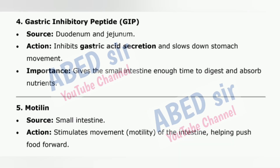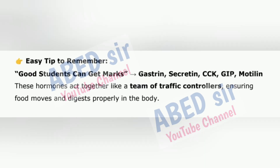4. Gastric Inhibitory Peptide (GIP) — Source: duodenum and jejunum. Action: inhibits gastric acid secretion and slows down stomach movement. Importance: gives the small intestine enough time to digest and absorb nutrients. 5. Motilin — Source: small intestine. Action: stimulates movement (motility) of the intestine, helping push food forward. Easy tip: 'Good Students Can Get Marks' — Gastrin, Secretin, CCK, GIP, Motilin. These hormones act together like a team of traffic controllers, ensuring food moves and digests properly in the body.